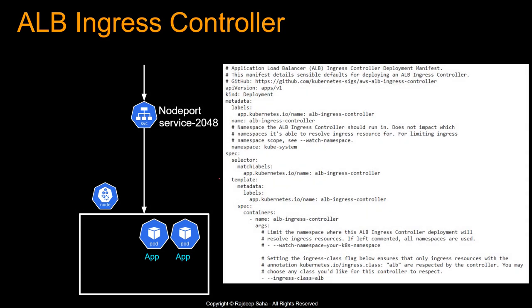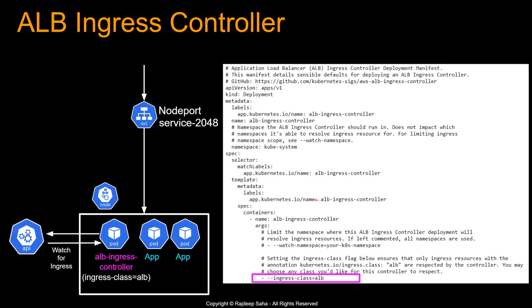Now we deploy the ingress controller. Ingress has two parts: the ingress controller and the ingress resource. The ingress controller is also a type of deployment — once you run it, it spins up a pod with the ALB ingress controller, with ingress class ALB. This pod watches for ingress events from the Kubernetes API server. At this point it is not creating any application load balancer — it's just running, and will only create the necessary AWS resources when the ingress resource comes into play.